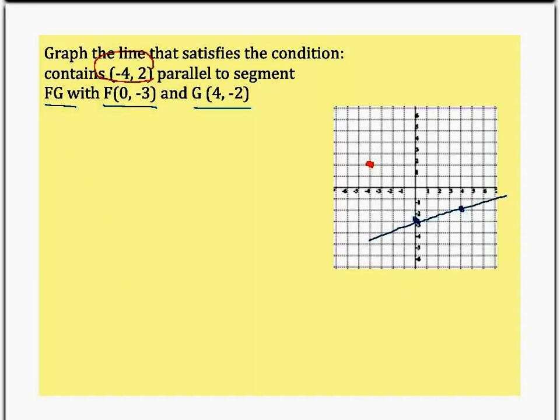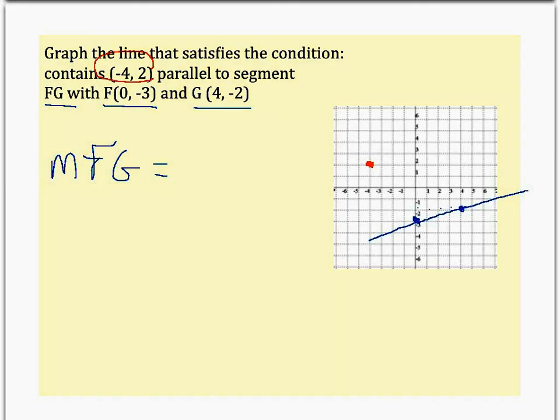So then I think it will be really easy to find the slope of line FG. When you've got the two points, just count. Start with the point on the left, count to the point on the right. I have to go up 1 to the right 4. So the slope of FG is 1/4th.